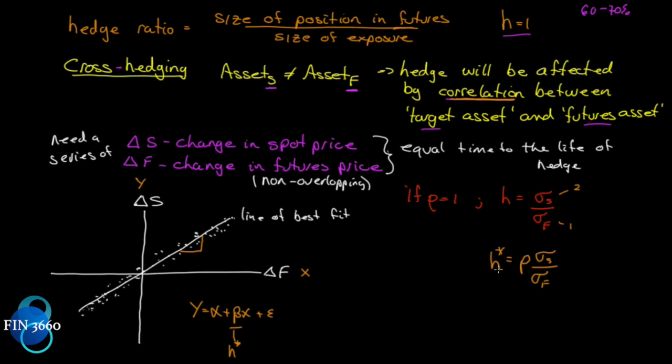So the cross-hedging hedge ratio is a function of the correlation, the coefficient of correlation between the two assets, multiplied by the ratio of their dispersion. And as you know, variance and standard deviation are measures of risk, and this is what we're doing - we're measuring risk here. So this is called the minimum variance hedge ratio.